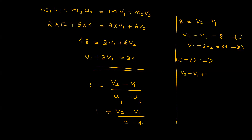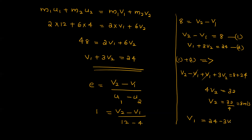Adding equation 1 and equation 2: V2 minus V1 plus V1 plus 3*V2 equals 8 plus 24. The V1 terms cancel, giving 4*V2 = 32, so V2 = 32/4 = 8 m/s. Substituting back: V1 = 24 minus 3*V2 = 24 minus 24 = 0 m/s.